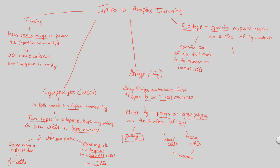Each B and T cell has its own specificity for a specific epitope. In innate immunity, there was a general set of recognizable structures. But in adaptive immunity, each B and T cell — when fully developed — is specifically looking for a specific epitope on a specific organism. For example, one B or T cell might recognize a specific part of E. coli specifically.